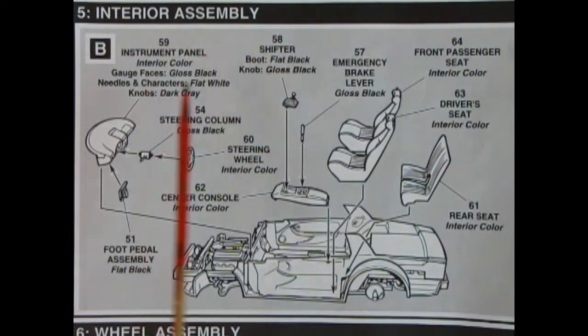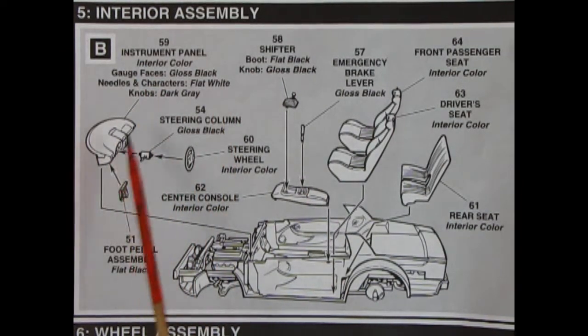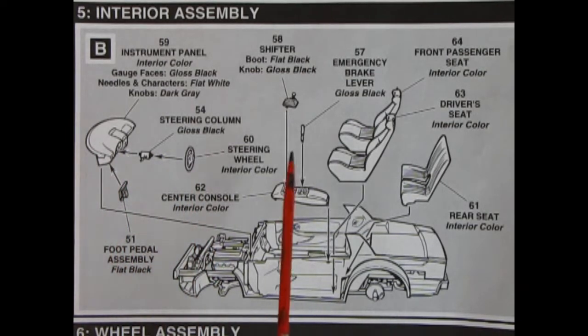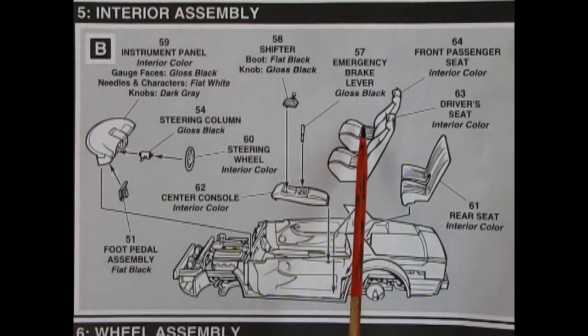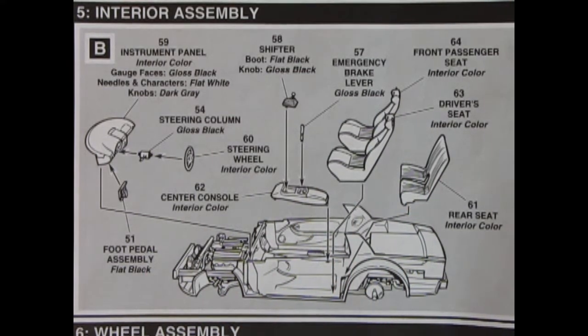Panel 5B is our interior assembly. Here we get a wonderful dashboard, steering column, steering wheel and foot pedals all separate. Really excellent work here. A shifter knob which drops in here with the boot attached. That's our center console. Then we've got our emergency brake going in there, the front bucket seats and the rear seat. All that glues in, really excellent work here.